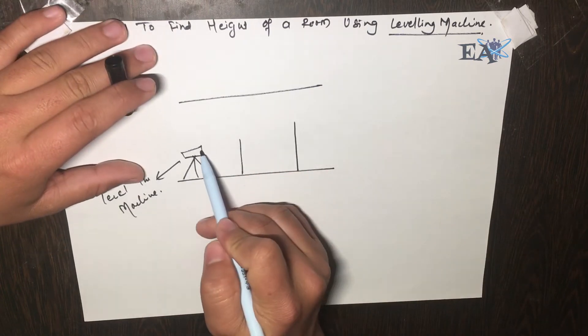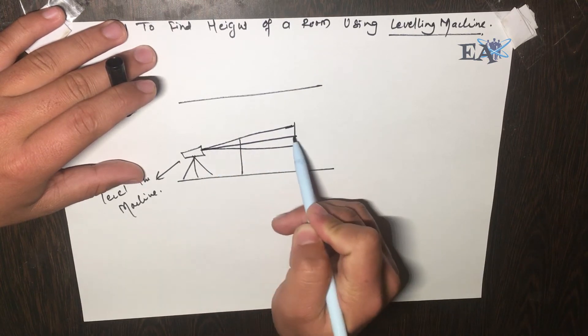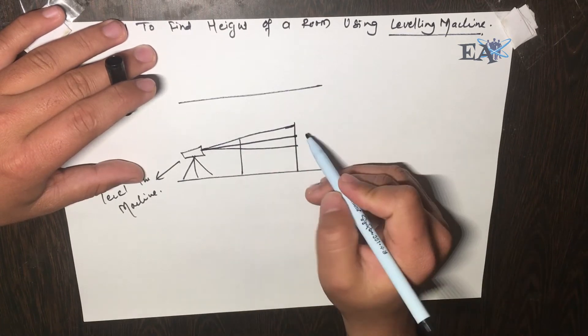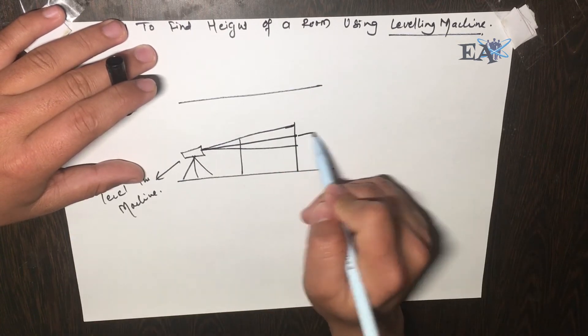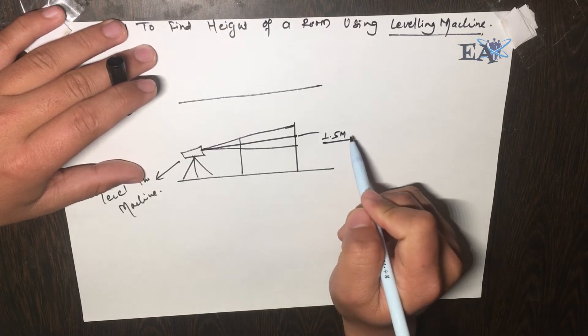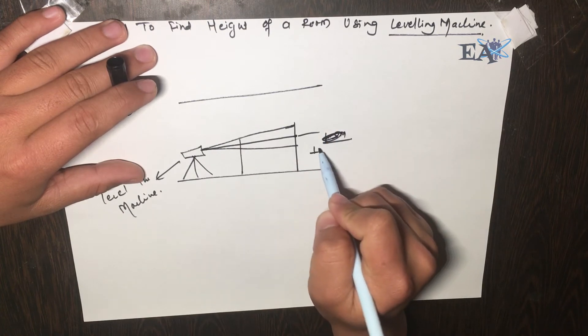After that, place the staff at a certain location that is convenient to read within that room. Take your first reading - top reading, bottom reading, and middle reading for better accuracy. Suppose this reading is 1 meter.